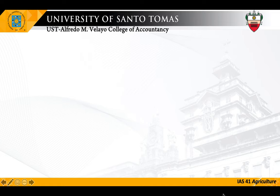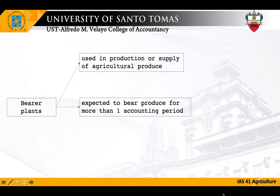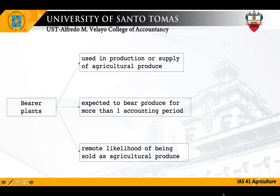According to IAS 41, bearer plants are: used in the production or supply of agricultural produce; expected to bear produce for more than one accounting period; and there is a remote likelihood of being sold as agricultural produce. For example, mango trees in a mango plantation are classified as bearer plants because they are used in the production of mango fruits.